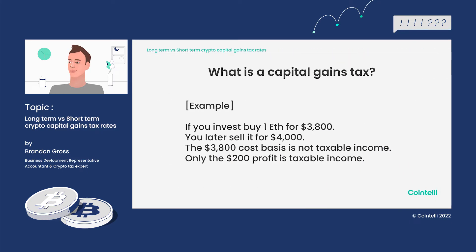For example, if you invest and buy one Ethereum for $3,800 and later on you sell it for $4,000, the $3,800 cost basis is not included as taxable income — that's your cost basis. Only the $200 profit is going to be the taxable income.